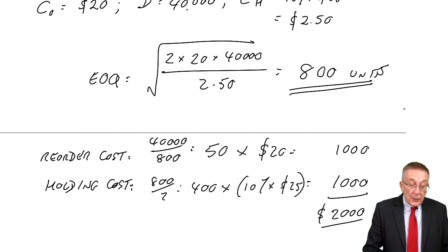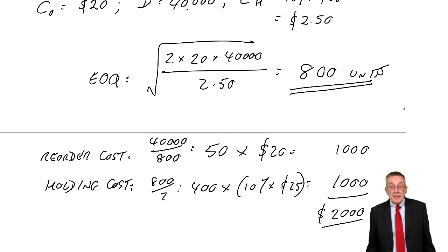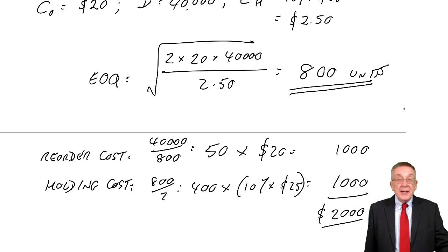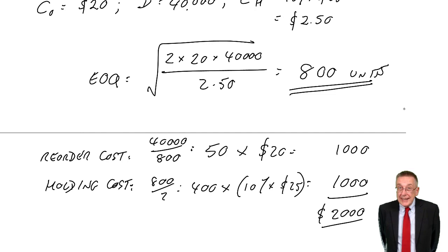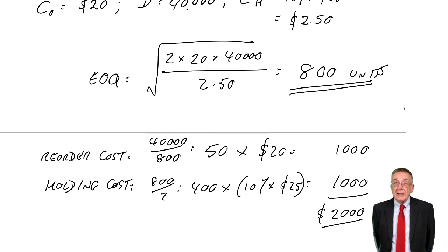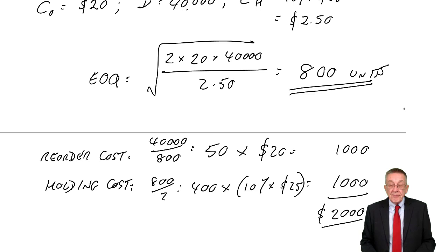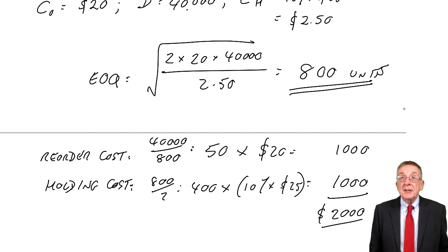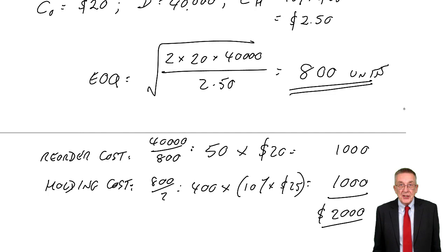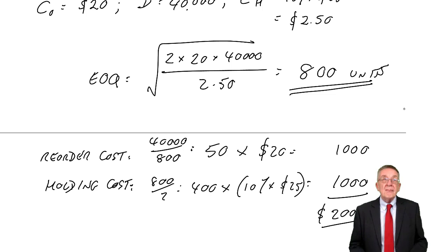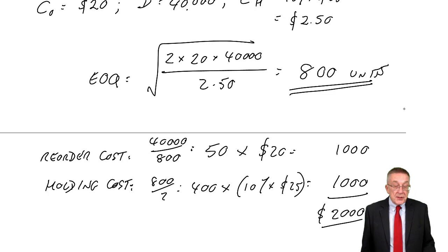So there's the economic order quantity. The only way to make it slightly more interesting is that we'd ignored the total purchase price, because over the year we were still buying 40,000 desks at $25 per unit — the total purchase price was the same however many we ordered, so it wasn't relevant to the decision. However, the one way you can make it more interesting is to tell you that if you order big quantities, you can have a discount on the purchase price. I'm going to stop this lecture, but in the next lecture we'll use the same example with more information about these quantity discounts.